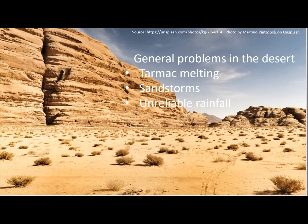Finally, some general problems in the desert: roads are difficult to build because it's so hot that the tarmac melts. Sandstorms are frequent, causing air pollution and breathing difficulties, with lots of dust picked up during a sandstorm. You can only get to most places in the desert by camel. There is also unreliable rainfall, which means that the River Luni's flow is unreliable, and if people are relying on that water to drink, that presents a further problem.